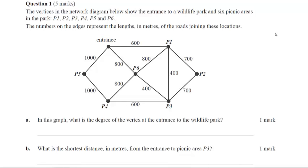This question here is taken from an exam 2 extended response and it was question 1 in this section, so relatively easy, but you need to make sure you're reading the questions carefully. So the vertices in the network diagram below show the entrance to a wildlife park and six picnic areas in the park labeled P1 through to 6. The numbers on the edges represent lengths in meters of the roads joining these locations. So we have a weighted graph here.